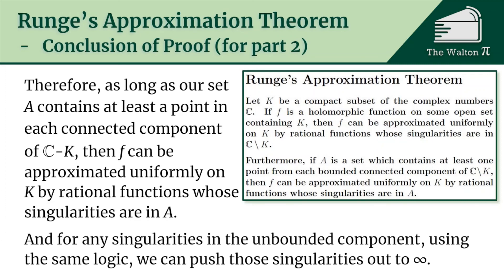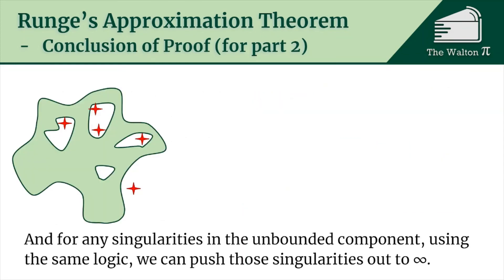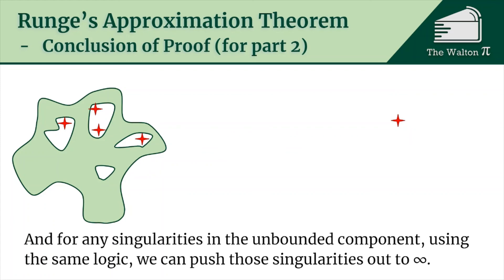If there are any singularities in an unbounded component, we can push them out towards infinity using the same logic: send the singularity to a point further from the origin and repeat the process, pushing those singularities all the way out to infinity. We take a point that was close, send it further away to get a new rational function, and keep sending that singularity further and further out towards infinity.